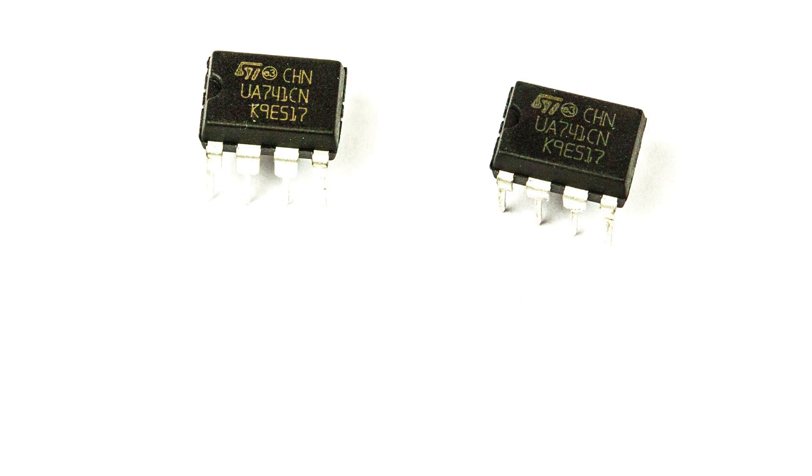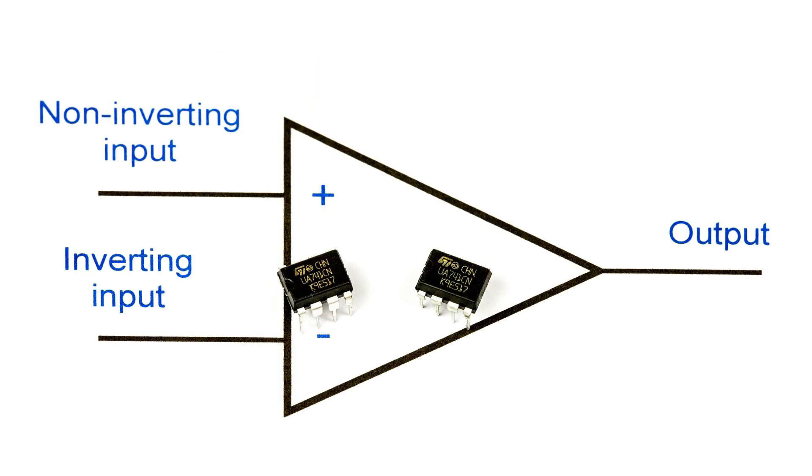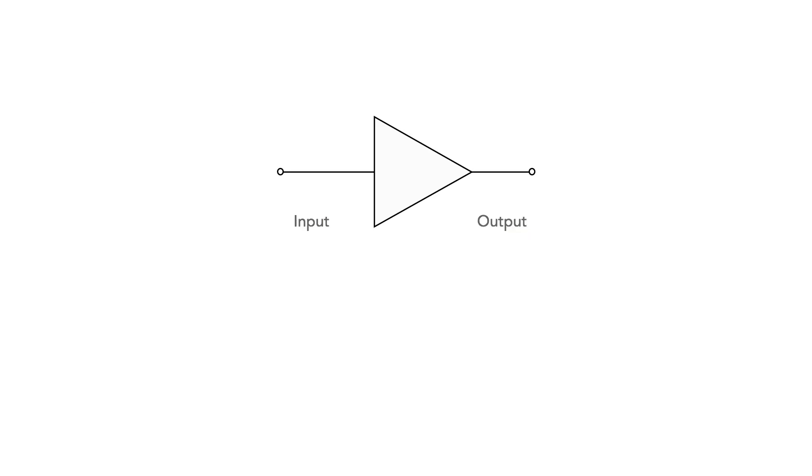Op-amp chips are available in many forms, both traditional leaded varieties as well as many surface mount types. The basic function of an operational amplifier is to provide gain.